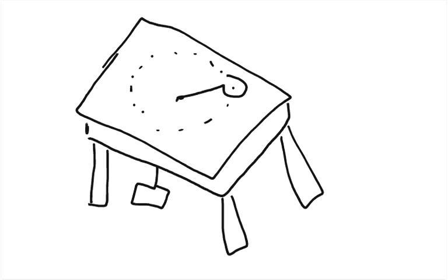Question 14 says an air puck of mass 0.3 kilograms is tied to a string and allowed to revolve in a circle of radius 1.3 meters on a frictionless horizontal table.